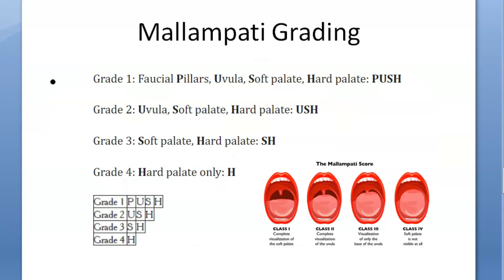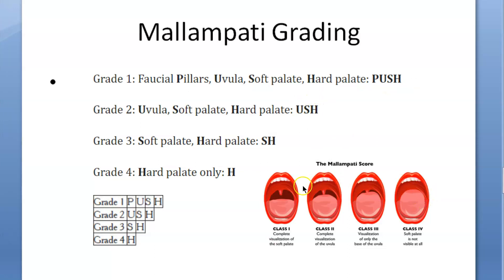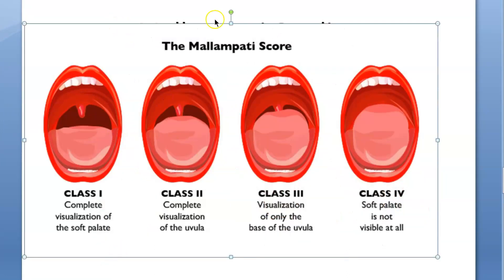There is a mnemonic to remember the grades. In grade 1, you can see PUSH: Pillars (tonsillar/faucial pillars), Uvula, Soft palate, Hard palate. Grade 2 — USH: Uvula, Soft palate, Hard palate. Note that the hard palate is always visible in all grades because it's in the front, so H is always there. Grade 3 — SH: Soft palate and Hard palate. Grade 4 — H only: just the Hard palate visible.